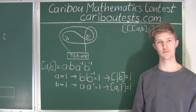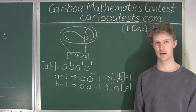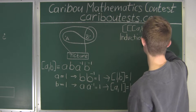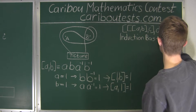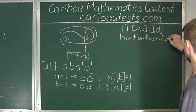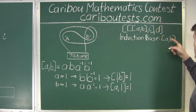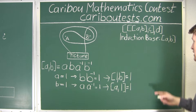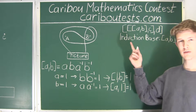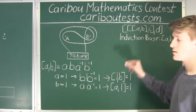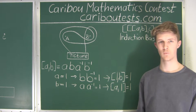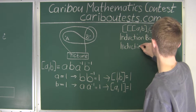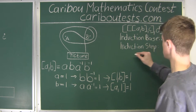Now let's prove by induction that this works for any number of nails. This has two steps. First is the induction base: we already showed that [A, B] represents a wrapping of string around two nails such that the picture falls down whether you pulled nail A or nail B. The second part is the induction step, where we assume we have n nails — that is, n minus 1 nested brackets.